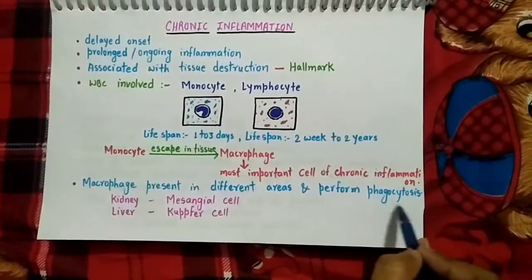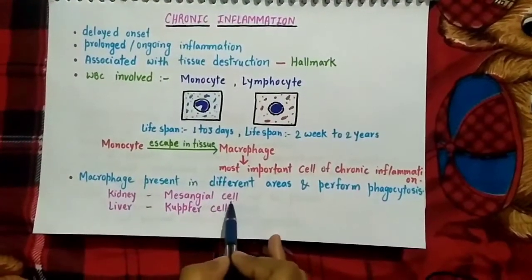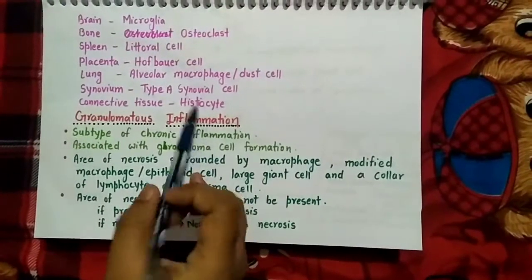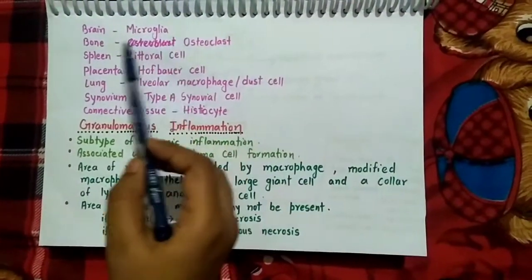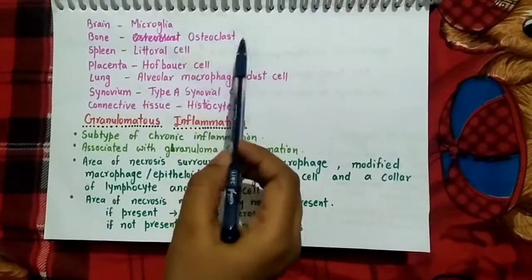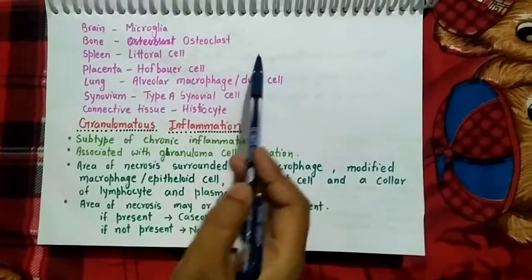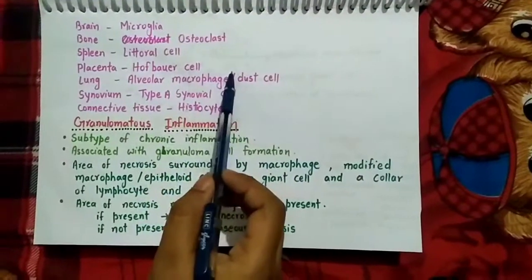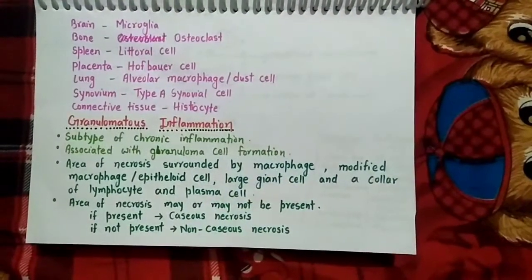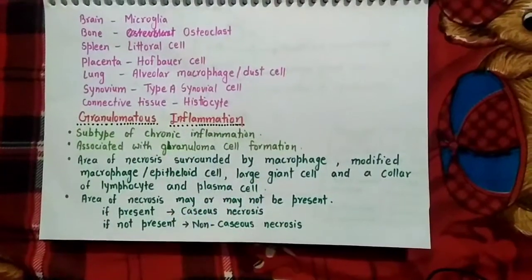Macrophages can be present in different areas of the body where they perform phagocytosis. In the kidney, the macrophage is called mesangial cells; in the liver, Kupffer cells; in the brain, microglia; in bone, osteoclasts, which break down bone tissue; in the spleen, littoral cells; in the placenta, Hofbauer cells; in the lung, alveolar macrophages also called dust cells; in synovium, type A synovial cells; and in connective tissue, histiocytes.